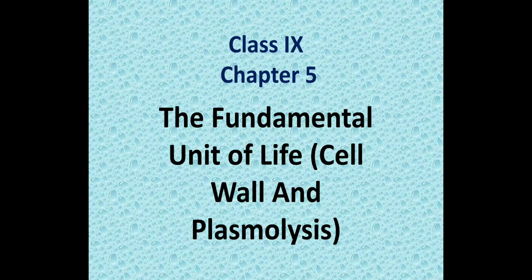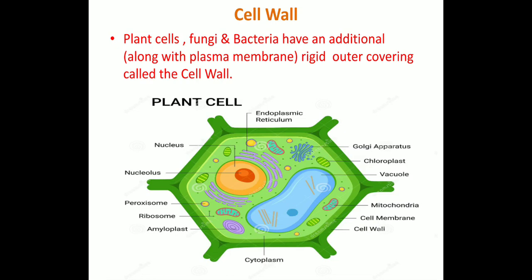Dear students, we have discussed about the discovery of the cell, about plasma membrane, and about eukaryotic and prokaryotic cells. Today we will discuss about cell wall and the phenomena shown by it — plasmolysis. Cell wall is particularly found in plant cells, fungi, and bacteria only.